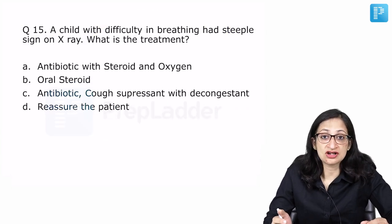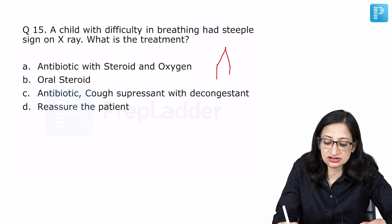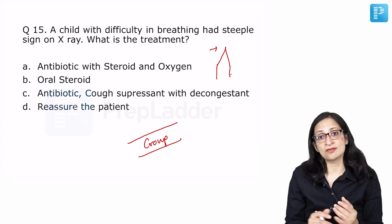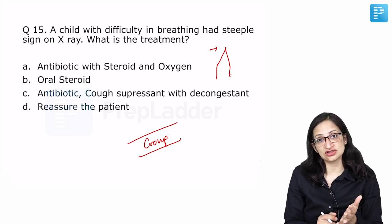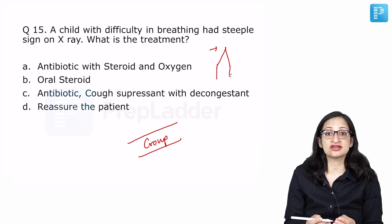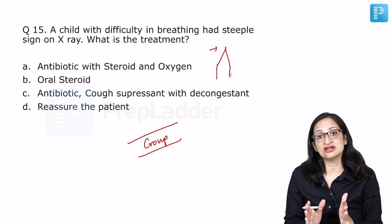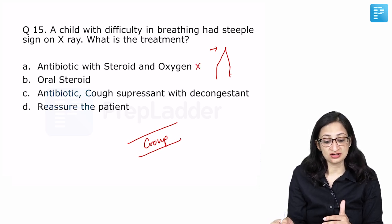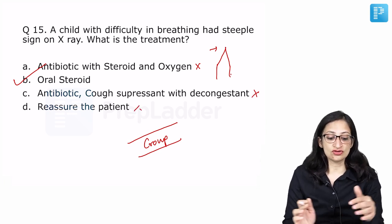Moving on to the next question. A child with difficulty in breathing had steeple sign on x-ray. We all know steeple sign on x-ray means the airways become narrow like this, and that is suggestive of croup or acute laryngotracheobronchitis. The treatment of choice for croup we know is apart from oxygen and respiratory support, you need to give steroids. Single dose, oral or intramuscular steroids, dexamethasone is usually preferred. Single dose steroids and in moderate to severe cases, nebulized epinephrine may be given. Because croup is a viral illness, there is no role of antibiotics. We have discussed this very well in our videos on respiratory system. Antibiotic with steroid and oxygen, we need not give antibiotic here because it is a case of croup which is a viral condition. Oral steroid, yes. That seems to be a plausible option. Oral steroid is the best answer of the given options.